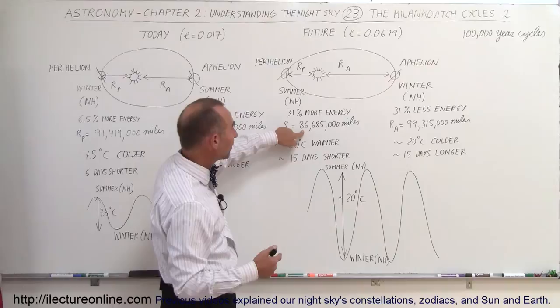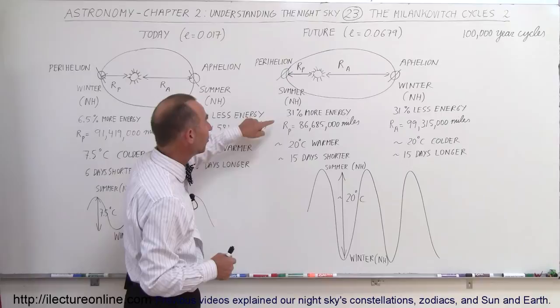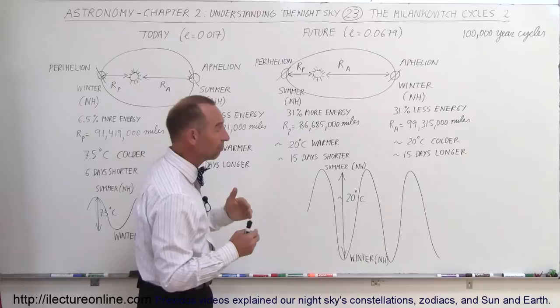In other words, that's more than six million miles closer and more than six million miles farther away than the average value of about 93 million miles, which means that we'll receive 31% more energy from the Sun when we're closer and 31% less energy when we're farther away.